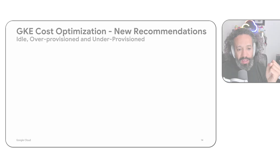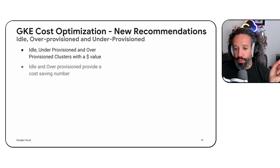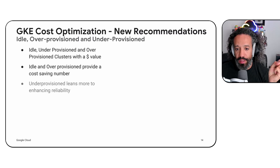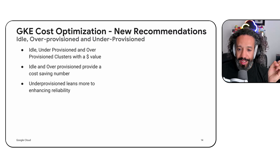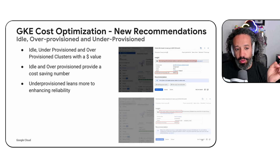The GKE Cost Optimization Dashboard has some new recommendations. It will show you idle, over-provisioned, and under-provisioned resources with their dollar value. The insights are visible directly inside the Google Cloud Console.